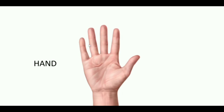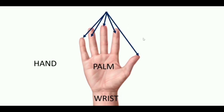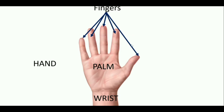Let's do a recap. This is our hand. This part of our hand is called the wrist. And this part of our hand is known as the palm. We have five fingers in our hand, and all five fingers have different names.